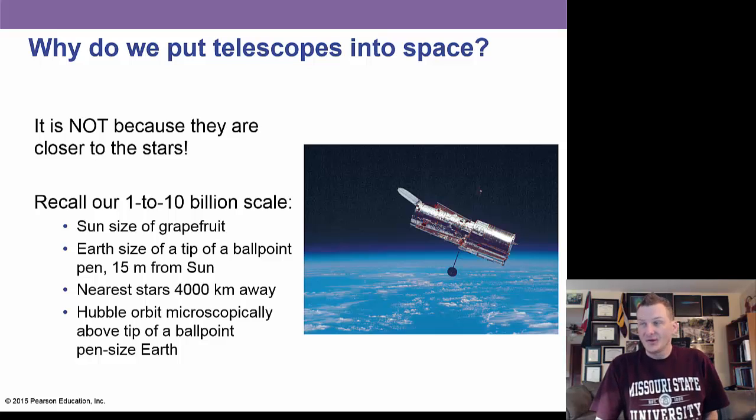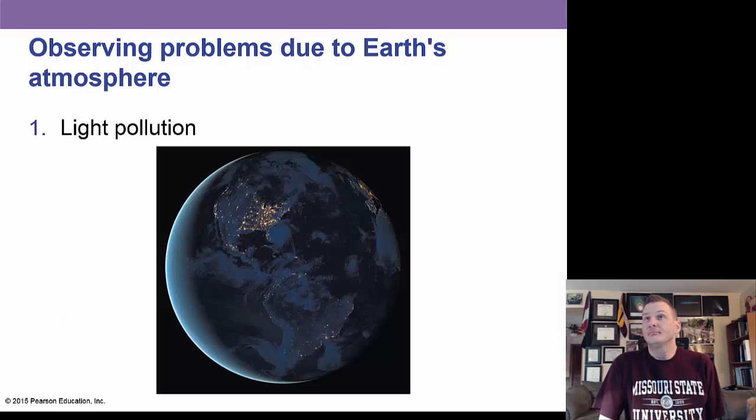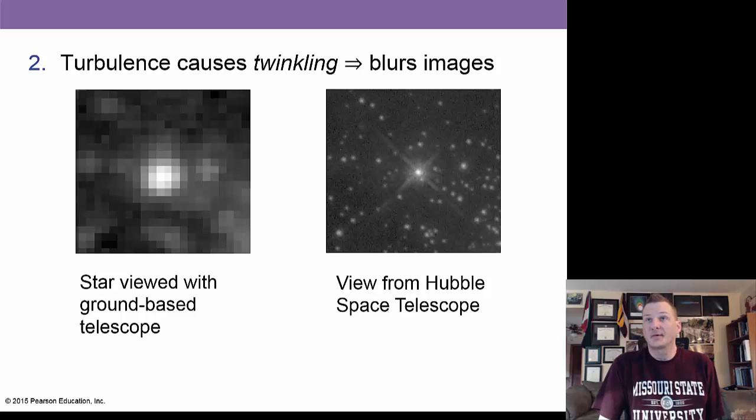We don't put telescopes like Hubble into space to get them closer to the stars. That's not true. We do that to get out of the atmosphere and the distortion that it makes. We also have to deal with light pollution. That really hazes up our sky. And we also worry about the atmosphere. Here we see a star from the ground and a star from Hubble to get rid of that turbulence of the atmosphere called twinkling or scintillation.